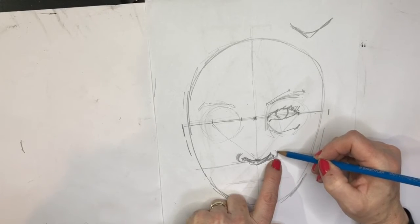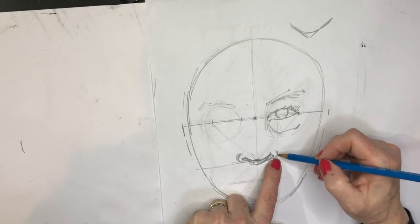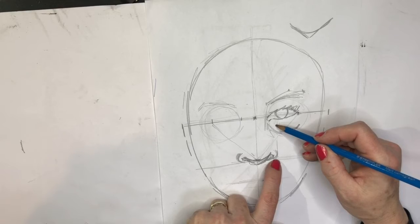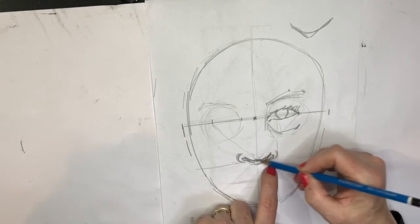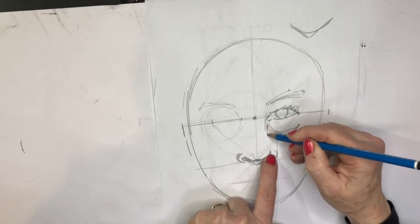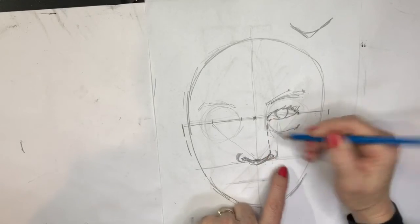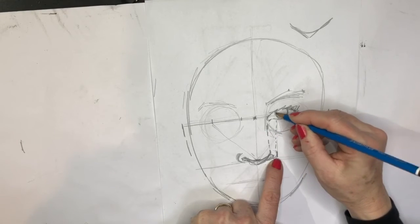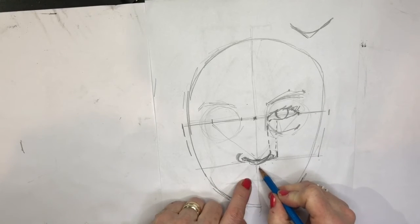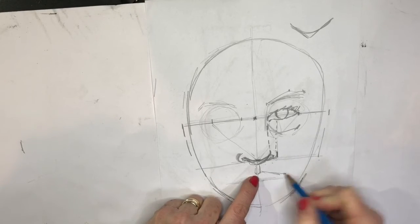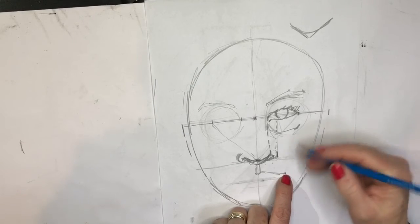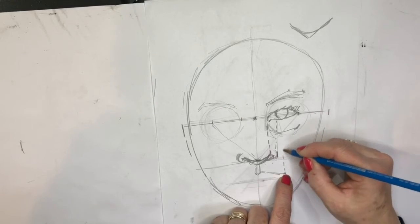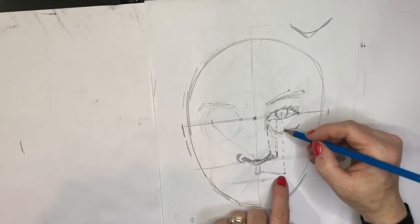Generally this bit here is supposed to line up with the inside of your eye. The outside of your nostril they say lines up with the inside of your iris. When it comes to drawing your lips, they say that the lips, if your face is relaxed and you're not pulling a face or smiling or anything like that, your lips are as wide as the middle of your eye.